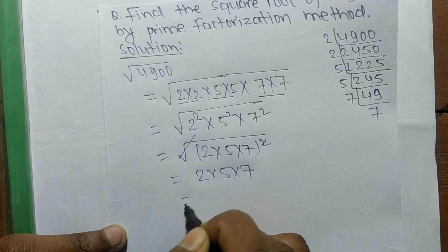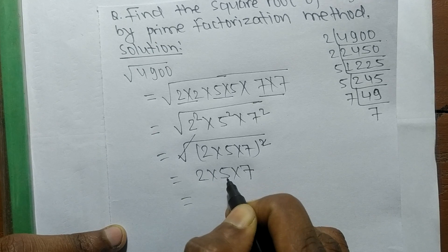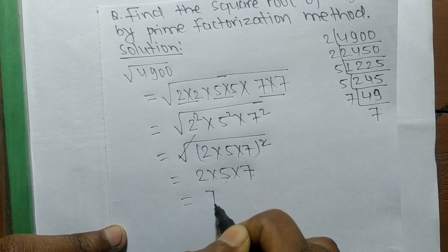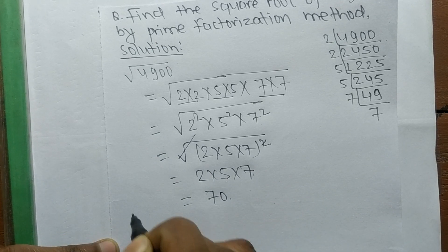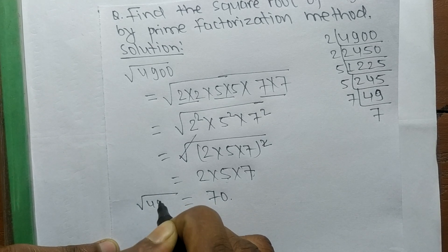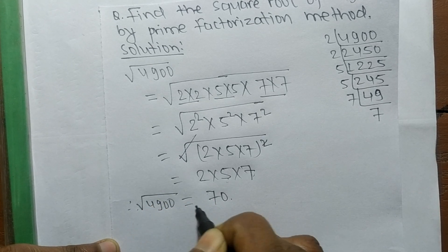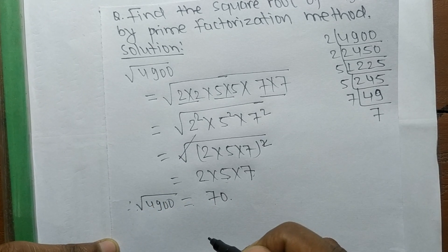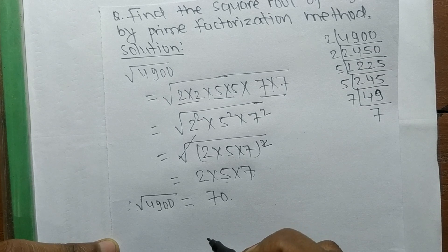So it is 2 times 5 equals 10, and 10 times 7 equals 70. Therefore, the square root of 4900 is equal to 70.